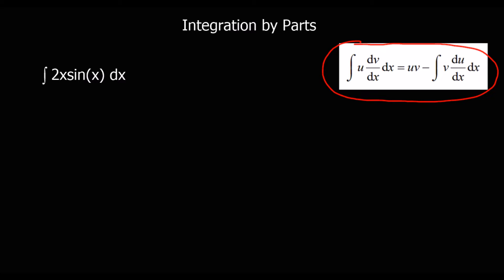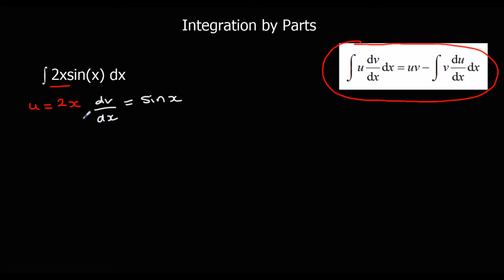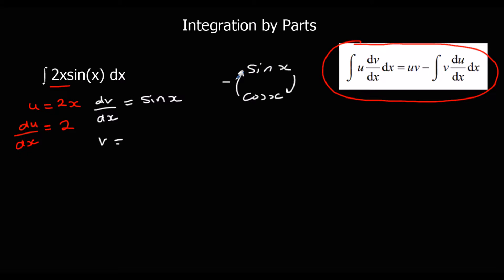We're going to pick u as the term we want to differentiate and dv/dx as the term we want to integrate. So we pick u as 2x and dv/dx as sin(x). The reason we do it that way round is because if we differentiate 2x it gets simpler — du/dx is just 2. That will make our second integration a lot easier. And integrating sin(x) gives negative cos(x).